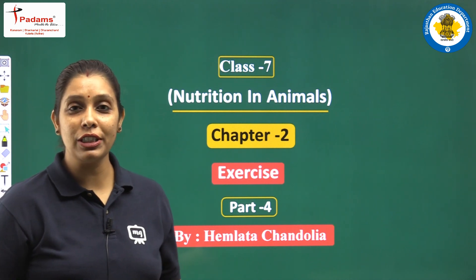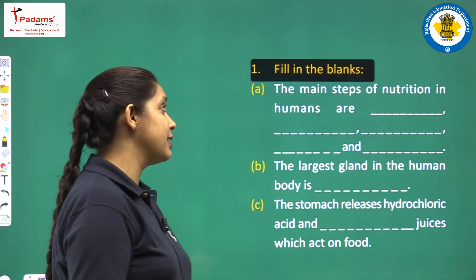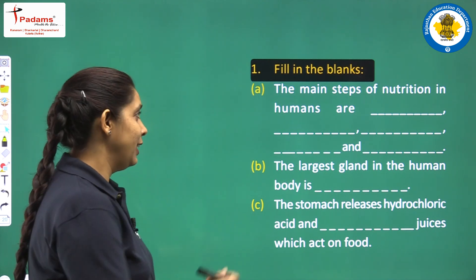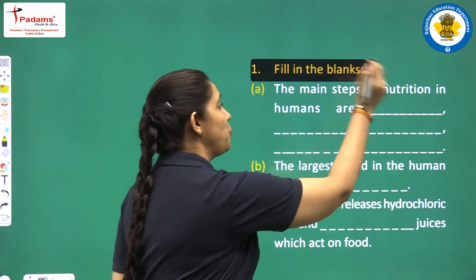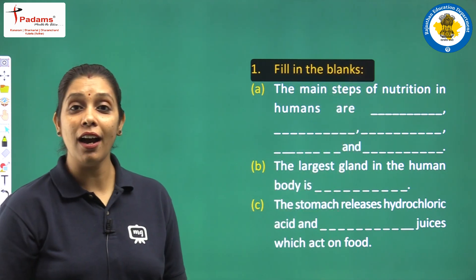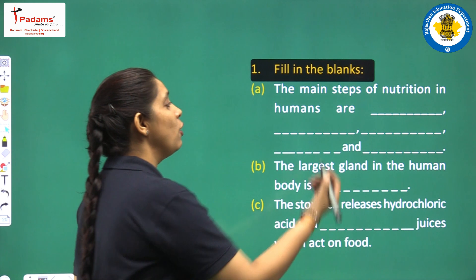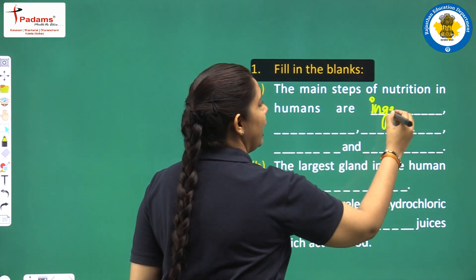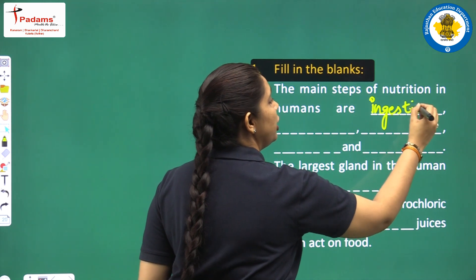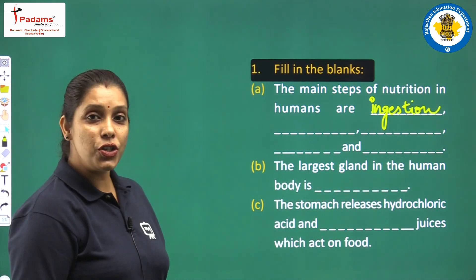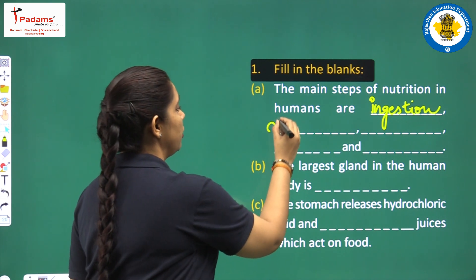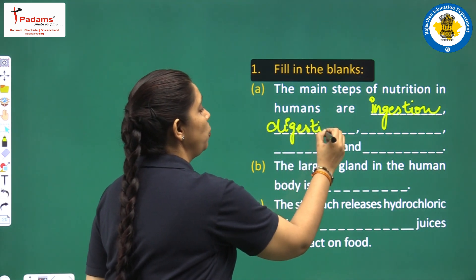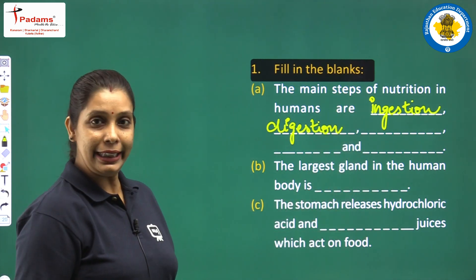Come on to the first question of this chapter. Question 1 is fill in the blanks — these are your favorite ones. The main steps of nutrition in humans are: first step is known as ingestion, and ingestion means taking food. After ingestion comes digestion, and digestion of food takes place in the stomach and small intestine.